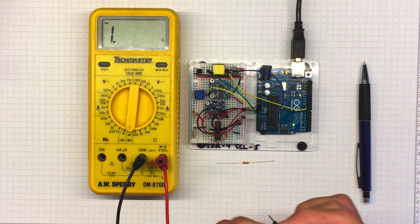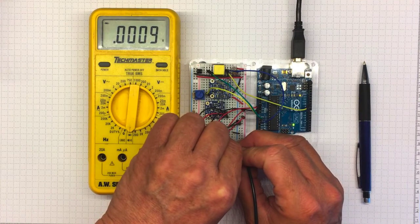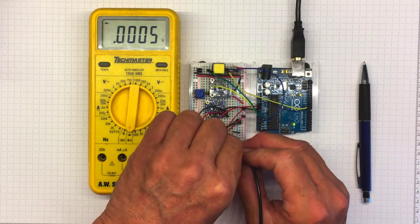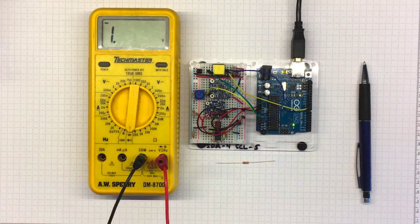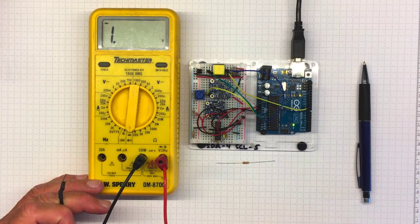So one of the things I can do, for example, is if I plug them into the board here, into two locations that are connected, it tells me they're connected. That's useful for checking your connections.